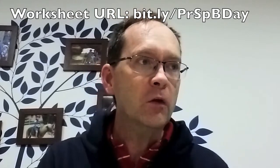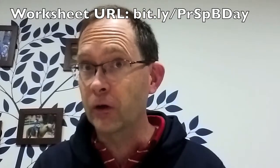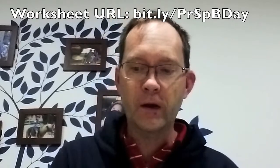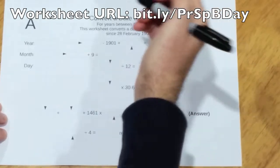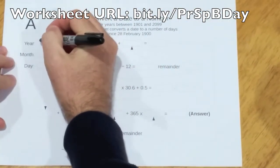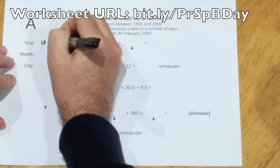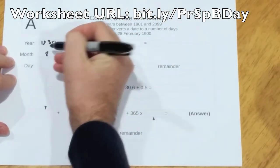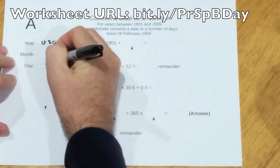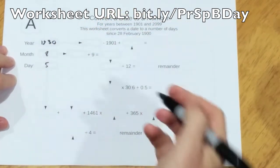We're going to work out Neil Armstrong's space birthday. We're going to work out how many Jupiter years old he is. So we start with the year he was born, which is 1930, and the month, which is August, and the day, which is 5th. He was born on the 5th of August, 1930.